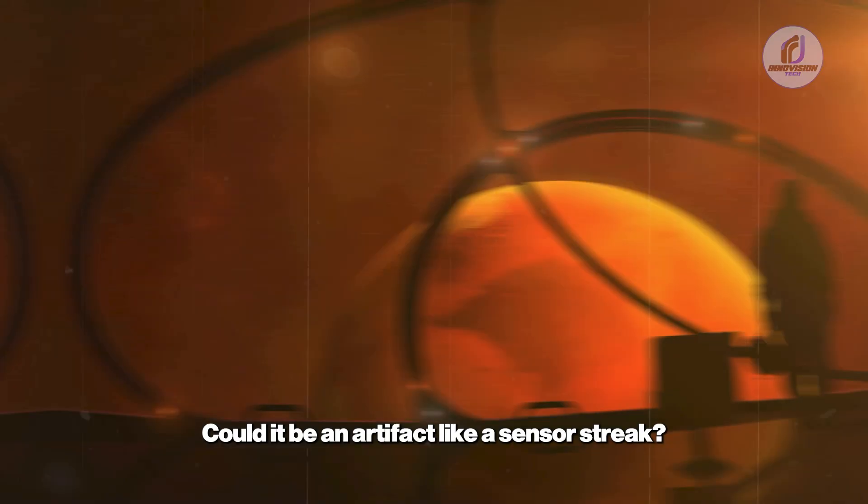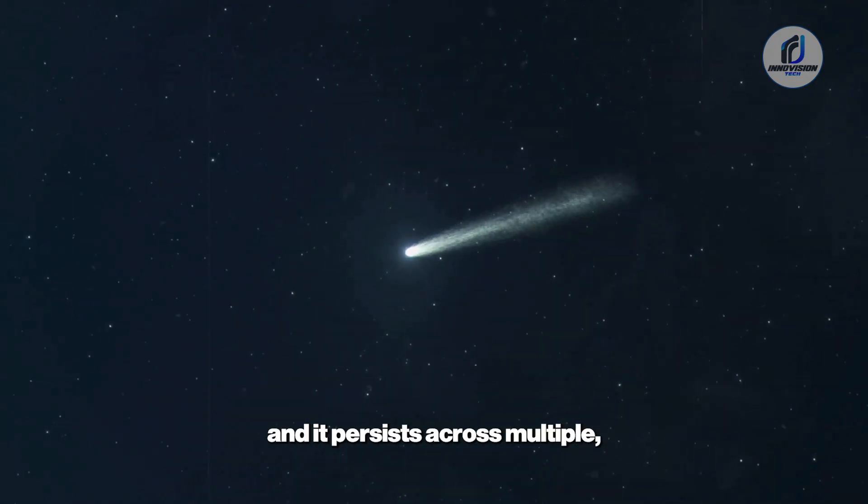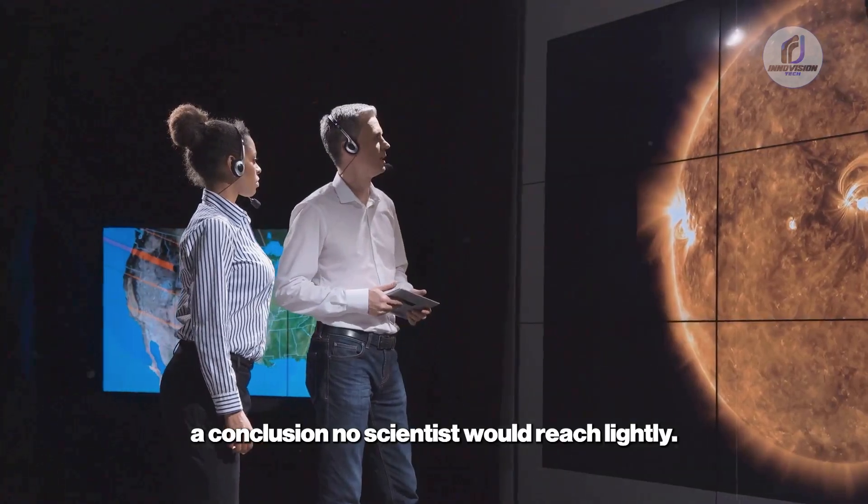Scientists like Imratoth, who specialize in comet activity, would immediately suspect an equipment malfunction. Could it be an artifact, like a sensor streak? The data suggests no. The feature is too sharp, too perfectly aligned with the sun's position, and it persists across multiple, independent processing attempts of the raw data. It's too regular to be random noise. We are left with a data point that suggests the rules of sublimation and solar pressure are, for some reason, not applying to this object, a conclusion no scientist would reach lightly.